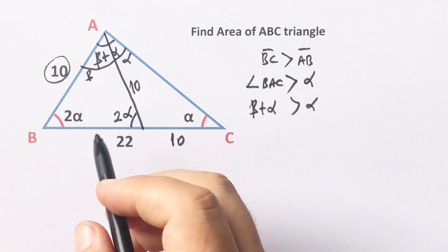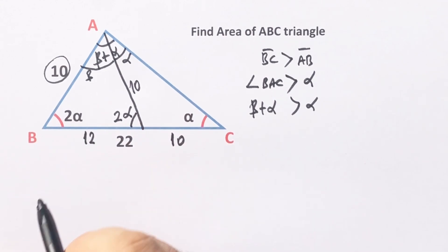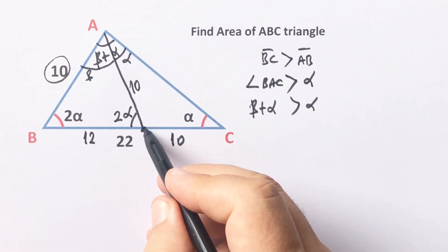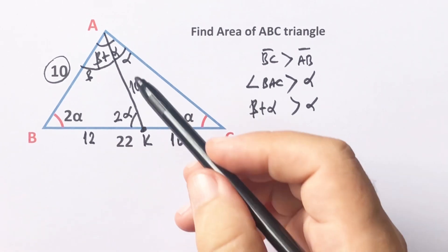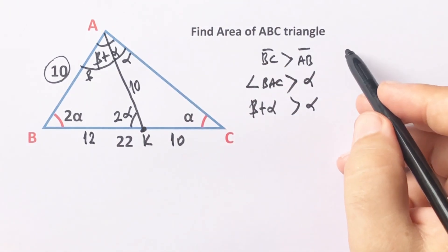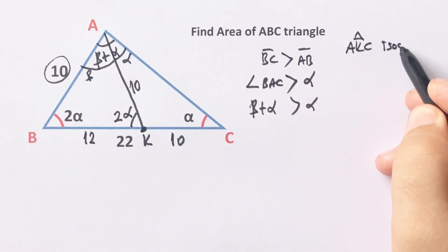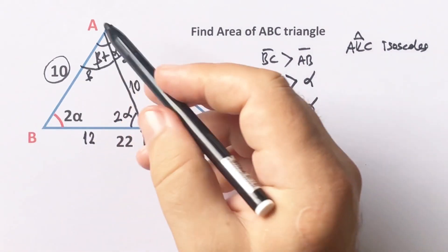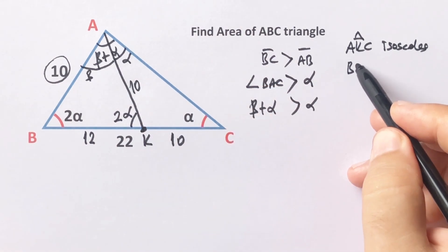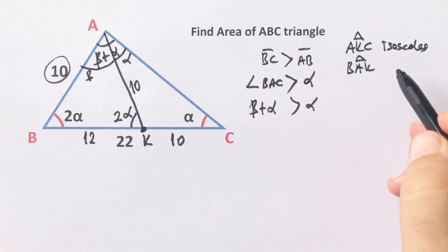This whole length equals 22, that means 12 units left here. Let's call here K point. As a result, AKC triangle is an isosceles triangle and BAK triangle is an isosceles triangle.